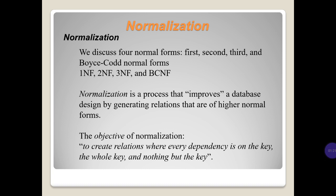We discuss four normal forms: first, second, third, and Boyce-Codd normal forms — 1NF, 2NF, 3NF, and BCNF. Normalization is a process that improves a database design by generating relations that are of higher normal forms. The objective of normalization is to create relations where every dependency is on the key, the whole key, and nothing but the key.